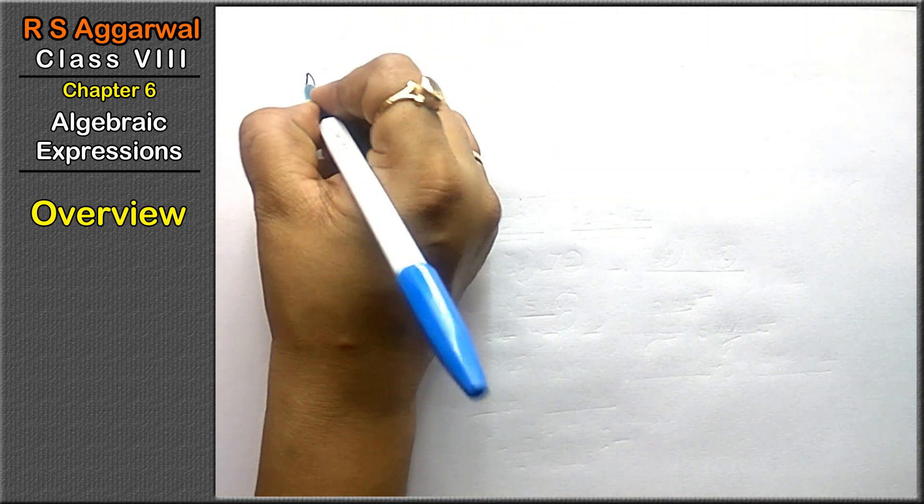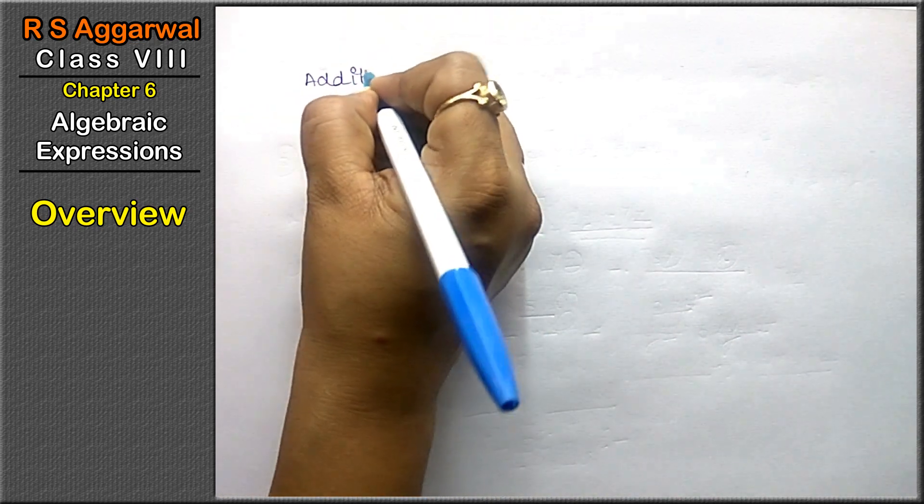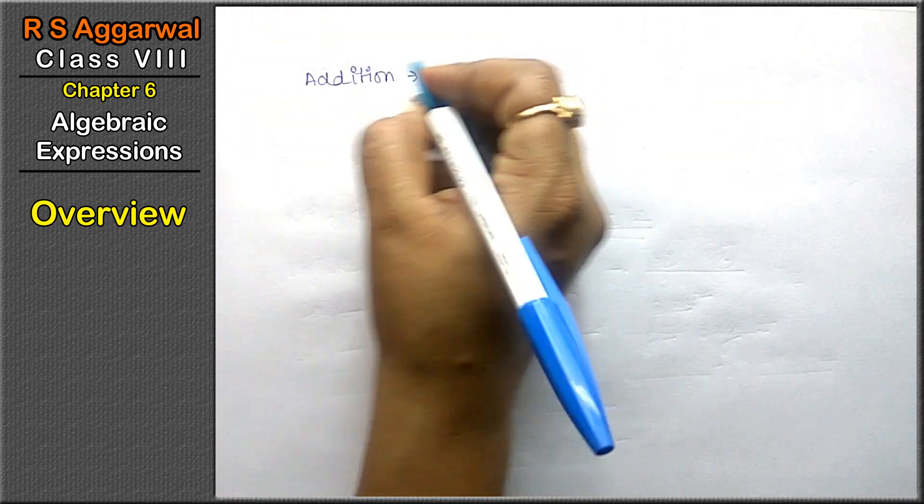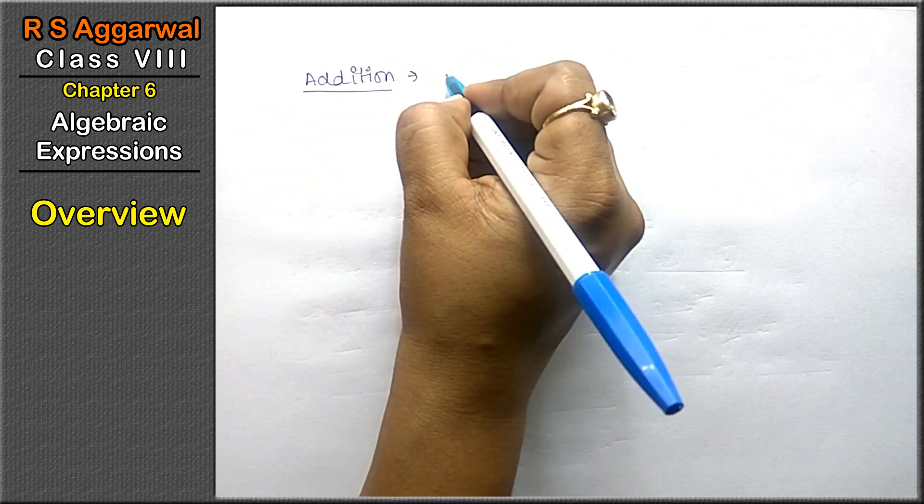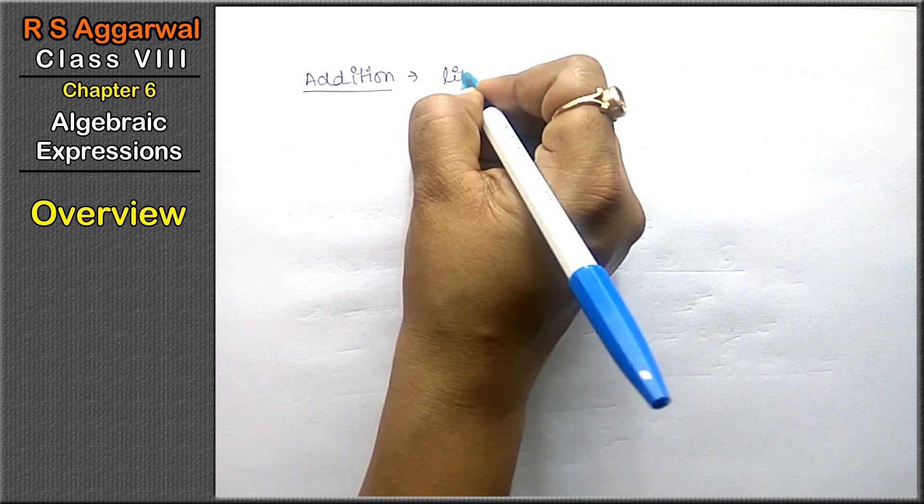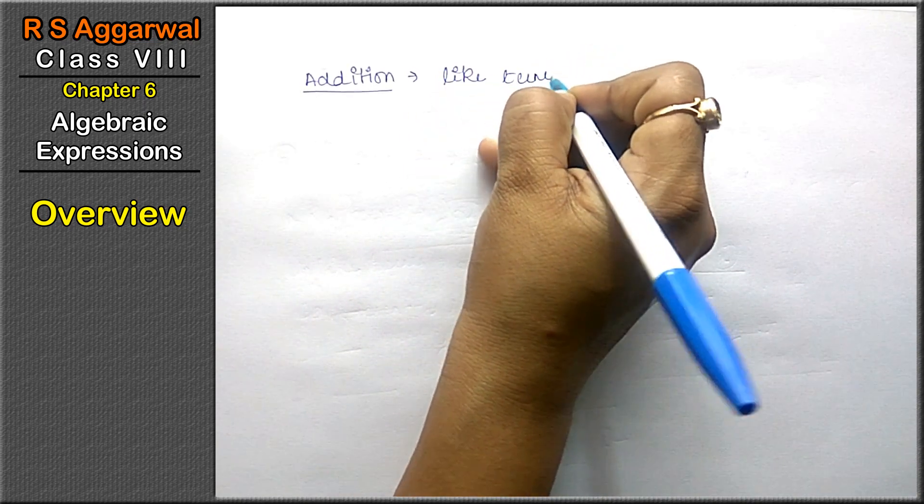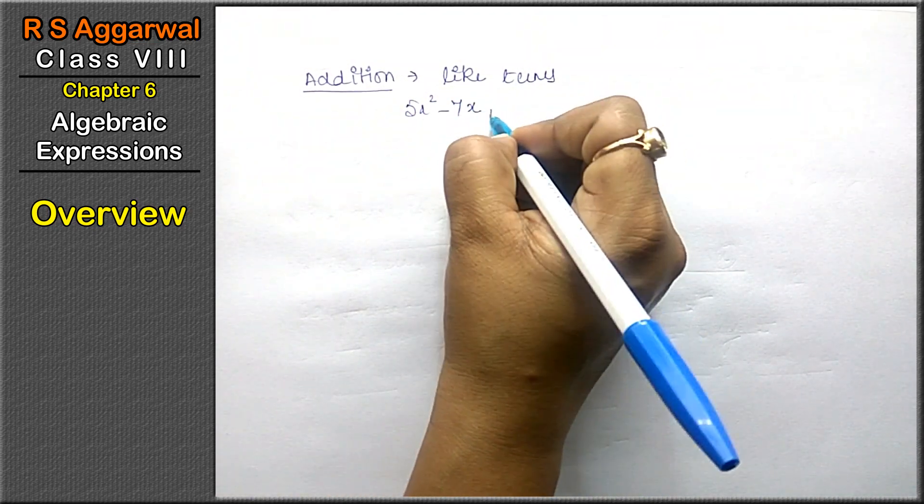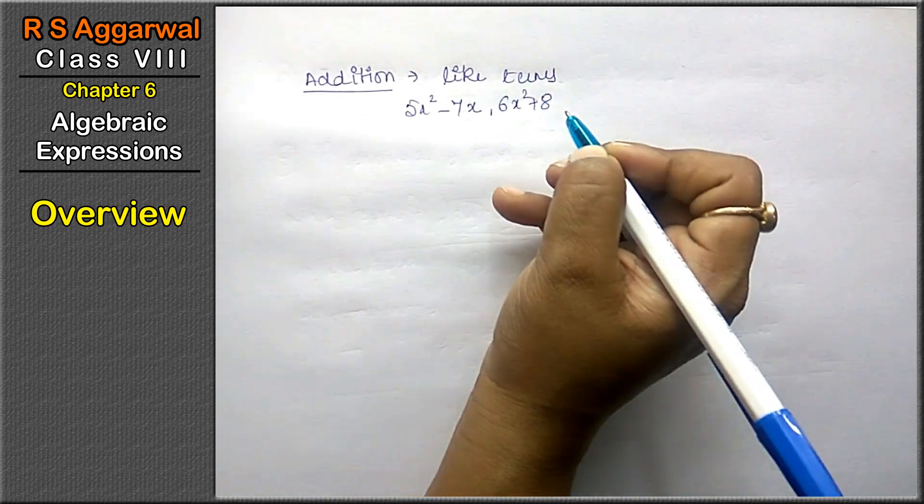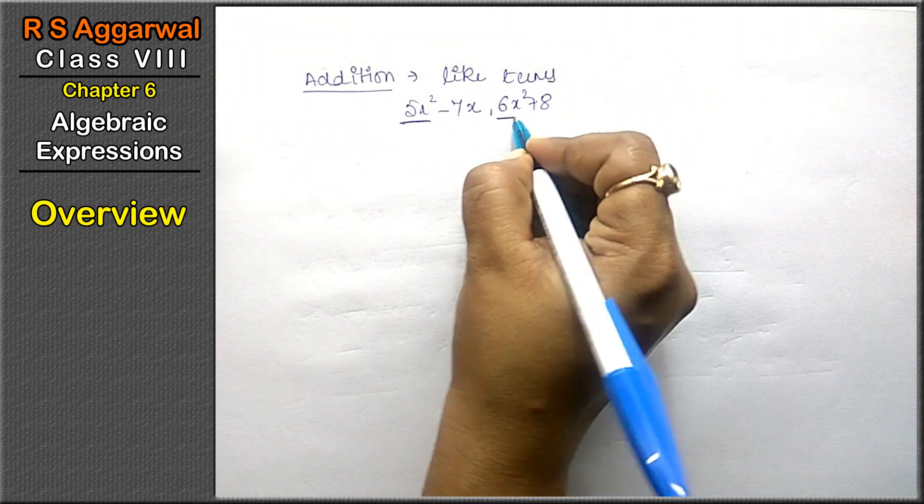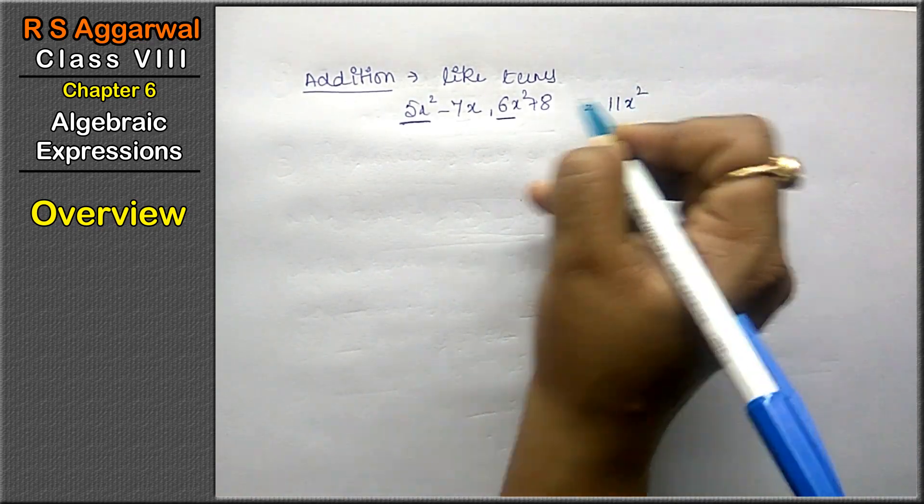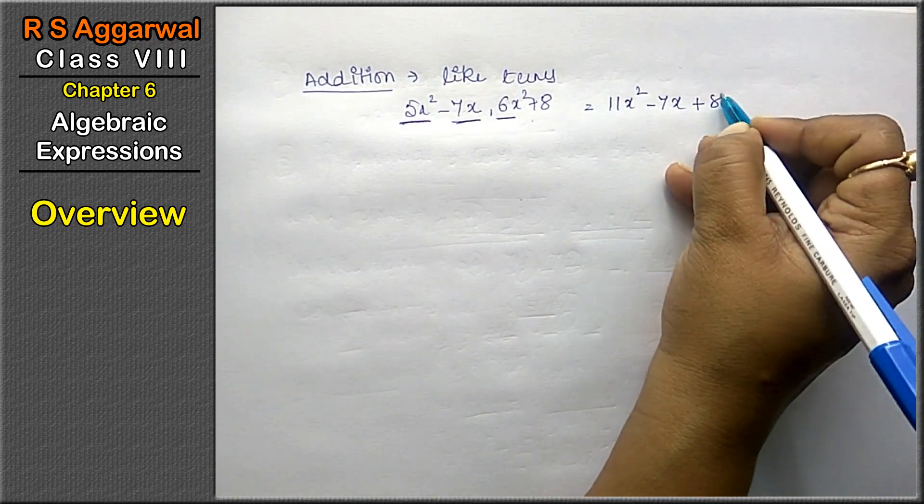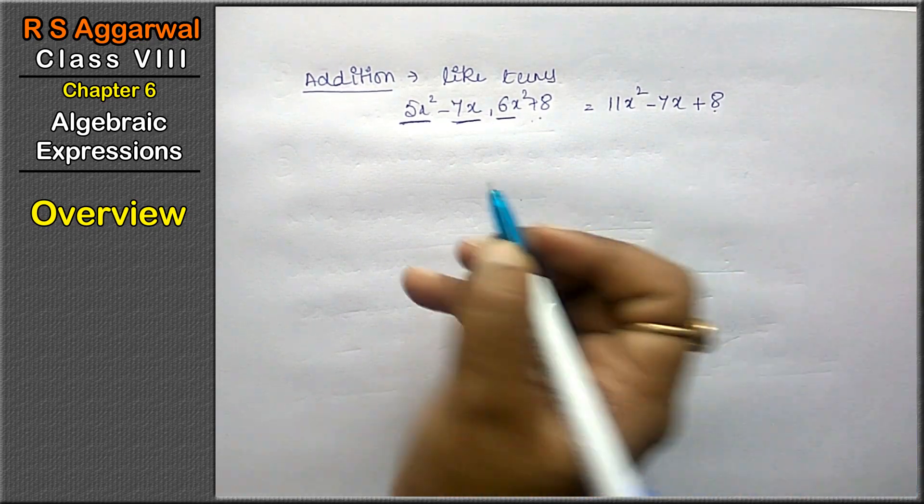How we will do addition of expressions. In addition, one main thing, either subtraction, addition or multiplication, the main thing is we will add only like terms. For example, 5x² - 7x, 6x² + 8. What are the like terms? These are like terms. So the answer will be 11x², this is an unlike term so it remains as is, and this last one is also not in the other expression, so it remains single.